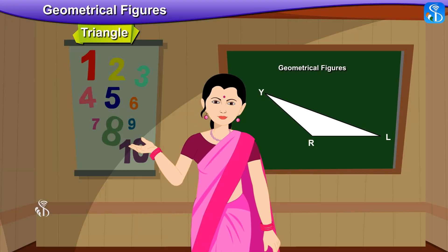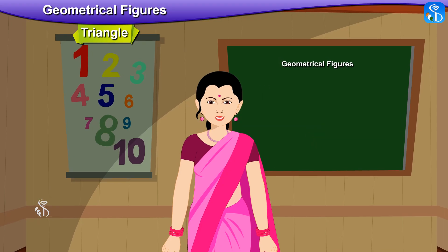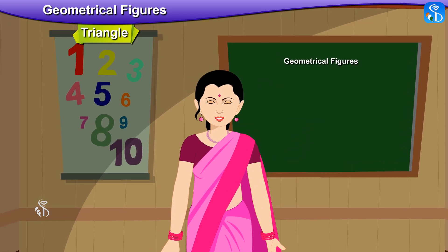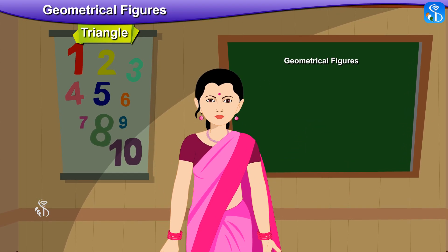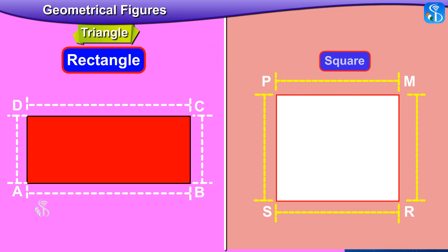Good. Students, now tell me: what is the difference between a rectangle and a square? A rectangle has 4 right angles with opposite sides of equal length, while a square is a special type of rectangle with all 4 sides of equal length.